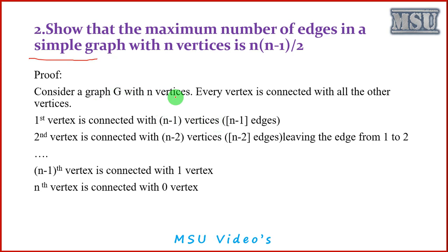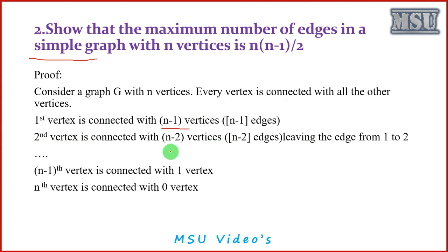Consider a graph G with n vertices where every vertex is connected with all the other vertices — this is what we call a complete graph. The first vertex is connected with the remaining n minus 1 vertices, giving n minus 1 edges. The second vertex is connected with n minus 2 vertices, because the edge to vertex one is already counted. Similarly, we leave the edge from one to two and continue.